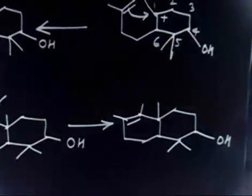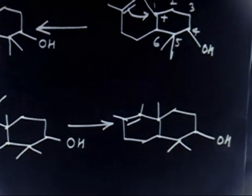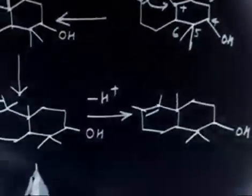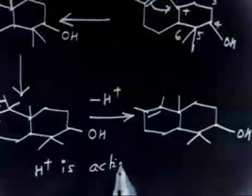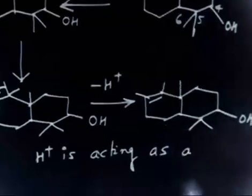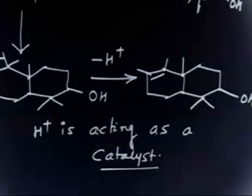One important point in this question: in the first step we generate a carbocation, then an alkene attacks, giving another carbocation. The alkene attacks again, completing the second ring cyclization. In the final step, since the product contains a double bond, we lose one H+. H+ is acting as a catalyst — used in the first step and lost in the last step. So ring cyclization can be done using H+ as a catalyst.